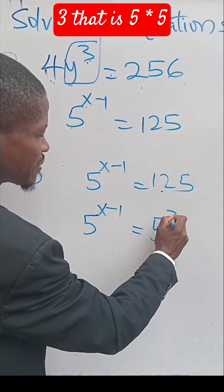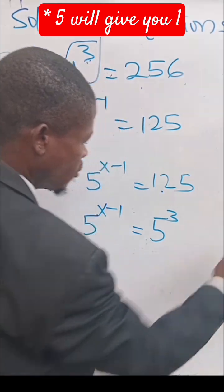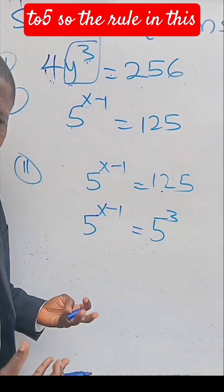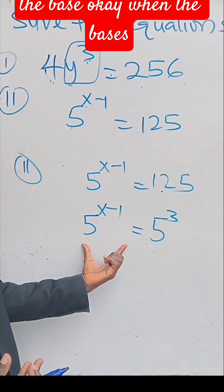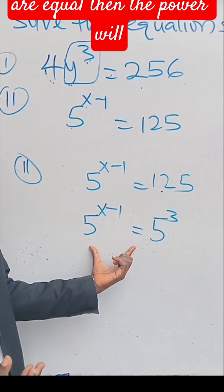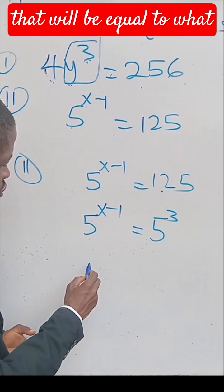5³. That is 5 times 5 times 5 will give you 125. The rule in this aspect is to look at the base. When the bases are equal, then the powers will be equal to each other.